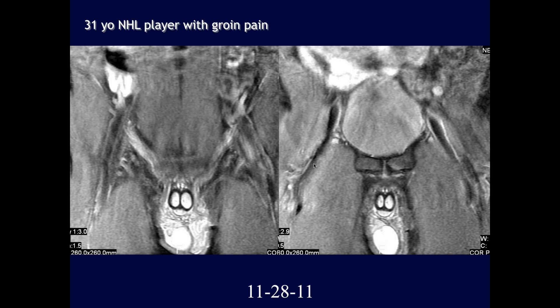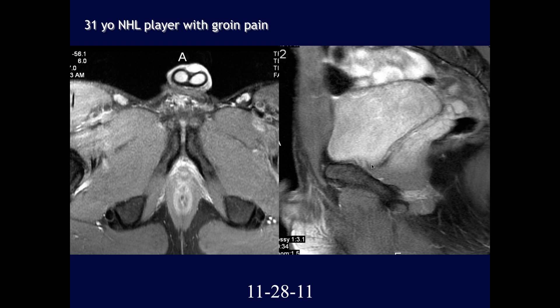A 31-year-old NHL hockey player with groin pain. Coronal images through the pubic symphysis show trace marrow edema along the left pubic symphysis and increased fluid signal at the bilateral adductor longus attachments, greater on the left — findings concerning for athletic pubalgia.